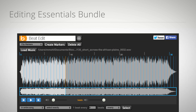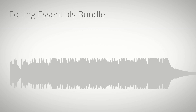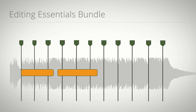Let's start with BeatEdit. A great edit is one that has a great rhythmic flow with the music. BeatEdit automatically detects beats in the music and represents them as markers in the Premiere Pro timeline. This can be the basis of a new edit or can be used to make fully automatic edits sync to music.